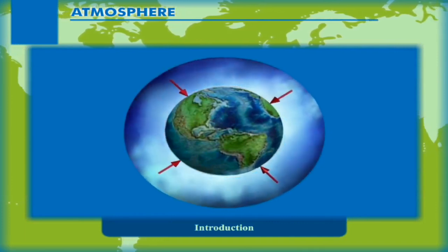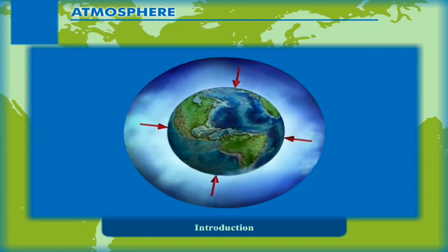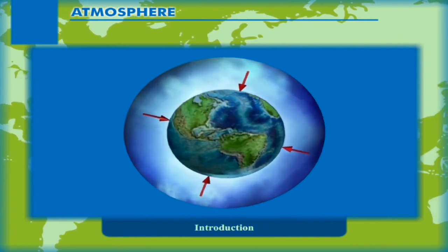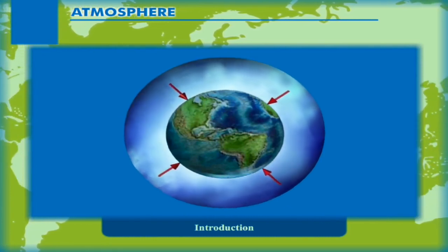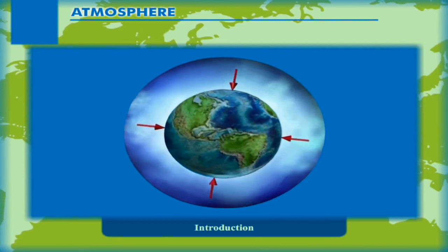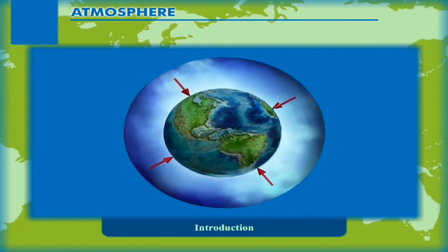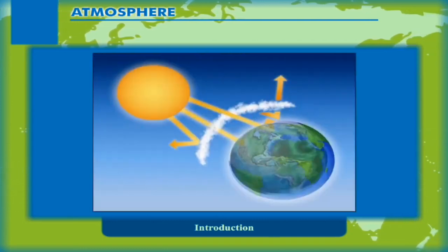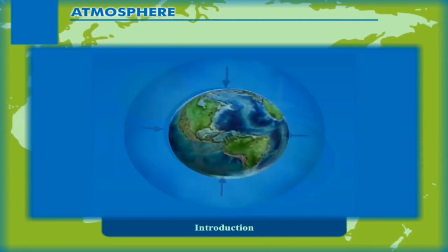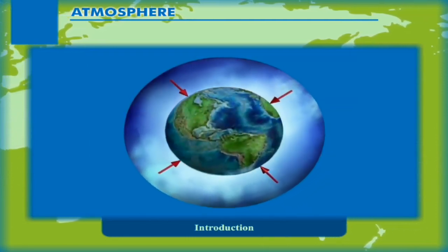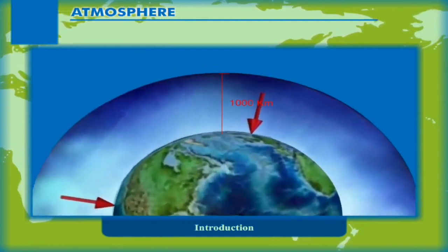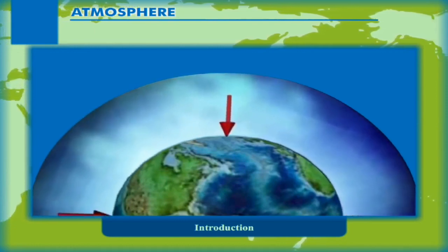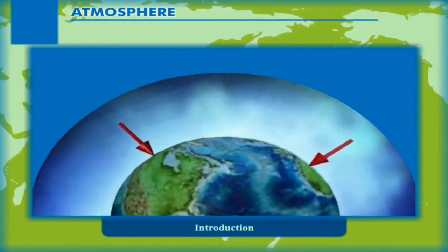Introduction: The blanket of air surrounding the earth is known as the atmosphere. Without air, earth would have been a lifeless planet. It not only supplies air and water to plants and animals but also protects them from the harmful rays of the sun. The atmosphere stretches above the earth to a height of more than a thousand kilometers. It is held in place by the earth's force of gravity.